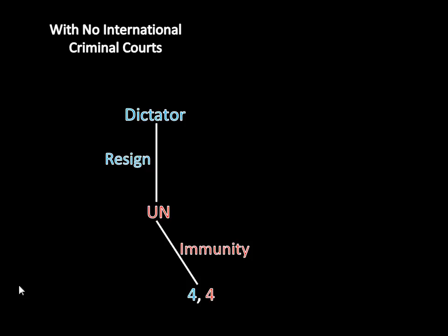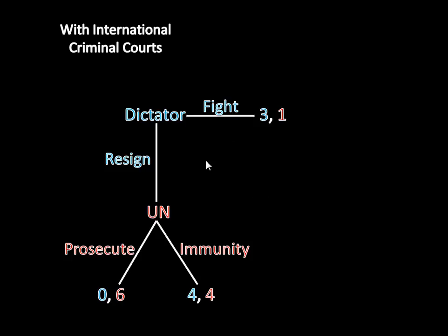Now let's transition into a world where there are criminal courts. We have to give the United Nations a move. If the dictator resigns, the United Nations can either prosecute the dictator or grant him immunity. If the United Nations prosecutes the dictator, that's really bad for him — he has to spend his life in jail. That's really good for the United Nations because they didn't pay the costs of war and still get to bring the dictator to justice — the United Nations gets 6. If the dictator fights, you have the war payoff, collapsed as before: 3 for the dictator and 1 for the United Nations.